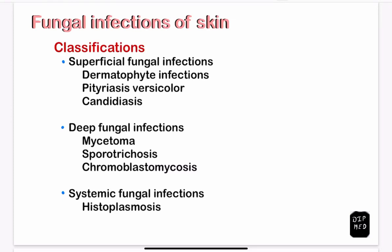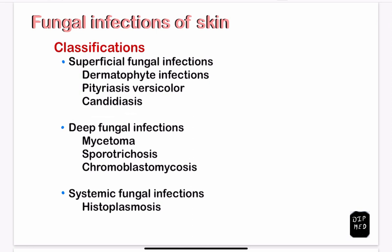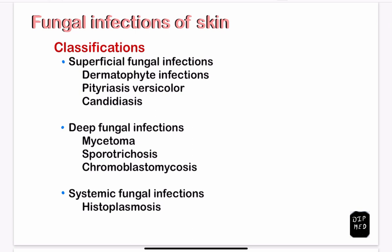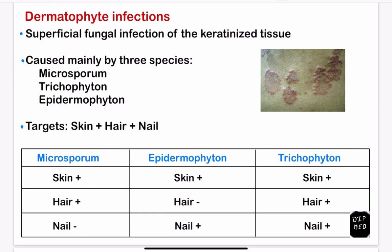Fungal infections of the skin can be classified into three classes: superficial fungal infections, deep fungal infections, and systemic fungal infections. The superficial fungal infections include dermatophyte infections, pityriasis versicolor, and candidiasis. The deep fungal infections include mycetoma, sporotrichosis, and chromoblastomycosis. The systemic fungal infections include histoplasmosis. In this video, we'll be talking about dermatophyte infections.